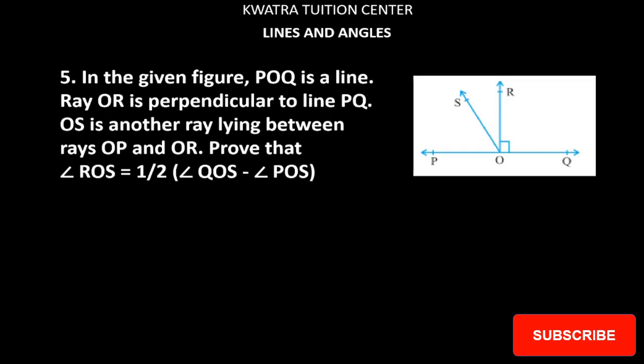Let's start with question number 5. In the given figure, POQ is a line. Ray OR is perpendicular to PQ. OS is another ray lying between rays OP and OR. Prove that angle ROS is half of (angle QOS minus angle POS).